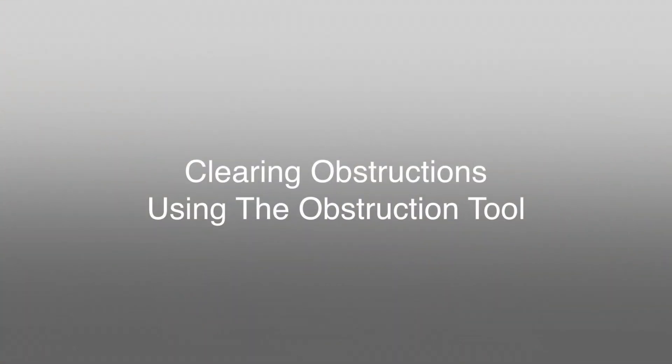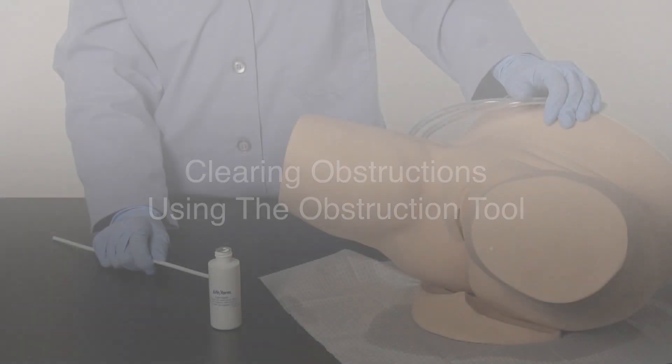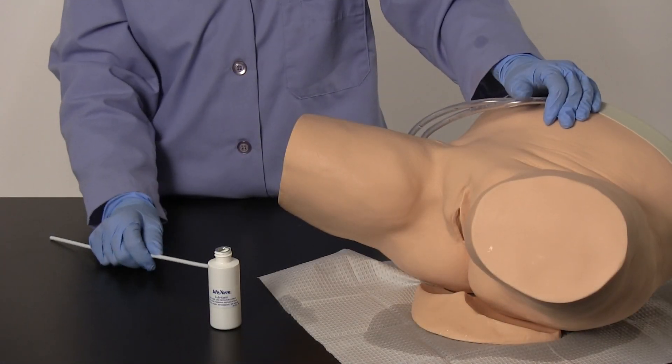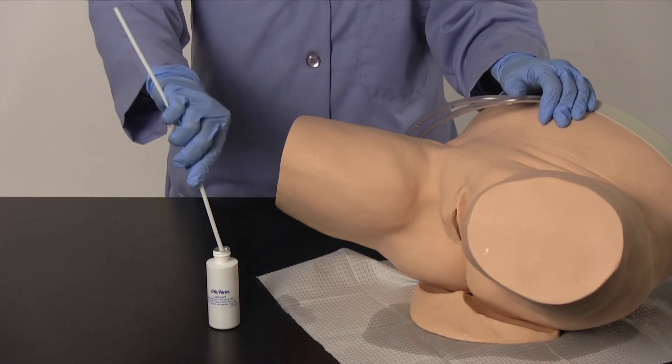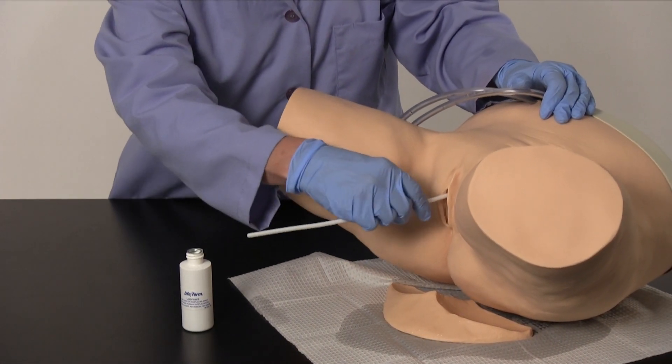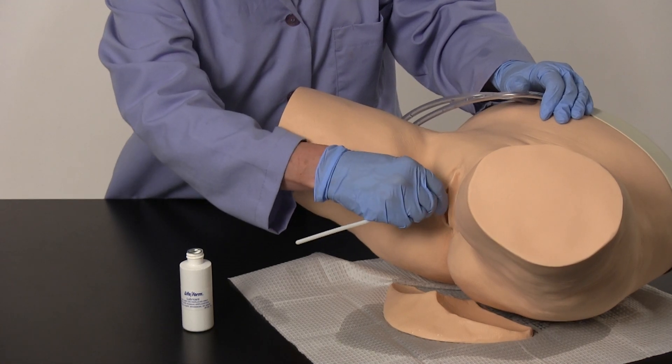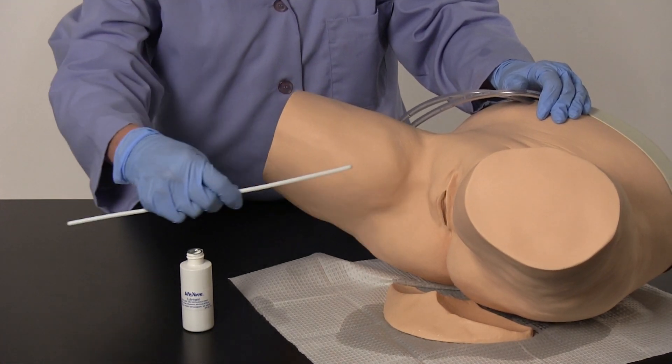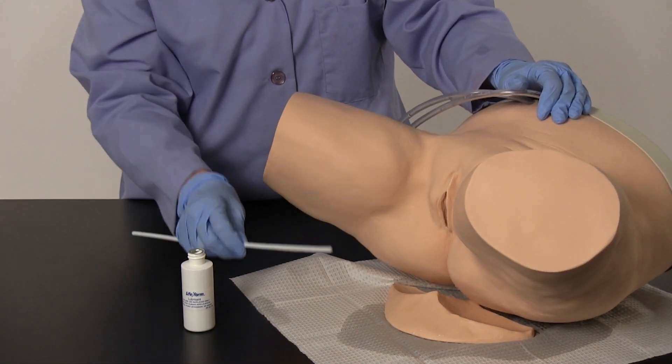Clearing obstructions using the obstruction tool. Generously lubricate the obstruction tool. Follow the catheterization procedures and insert the obstruction tool into the urethra and through the simulated sphincter until you feel the pop and enter the bladder. Follow this procedure by flushing the system with warm water.